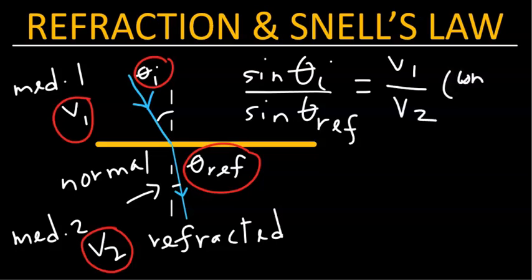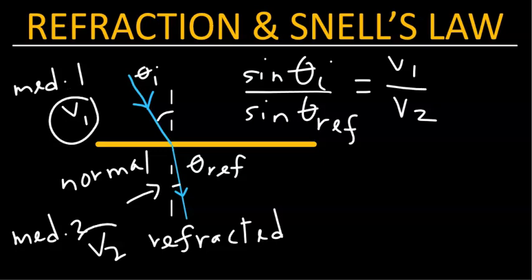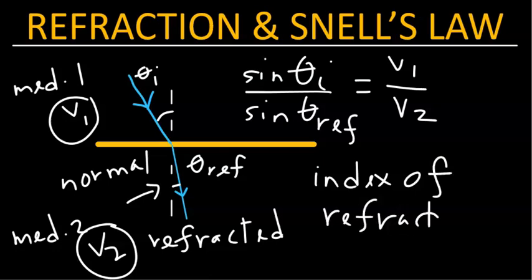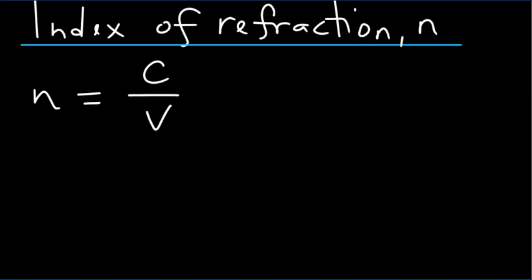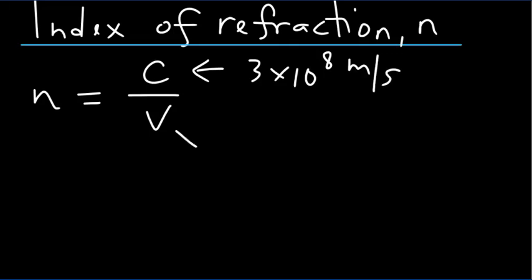This ratio is a constant for a given medium pair. Light has different speeds in different mediums because of a property of the medium known as the index of refraction, sometimes also called the refractive index. Index of refraction is defined as the speed of light in vacuum over the speed of light in that particular medium. Speed of light in vacuum is a constant — about 3 times 10 to the power 8 meters per second. Since n is a ratio of speeds, it is a pure number and is unitless.